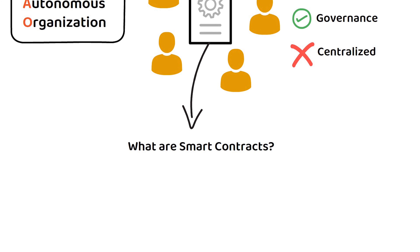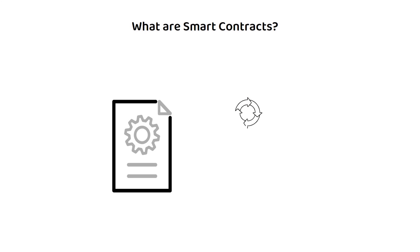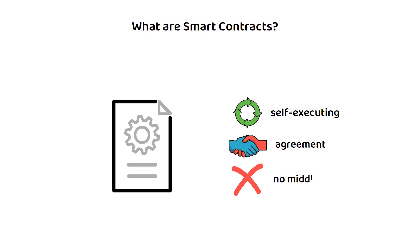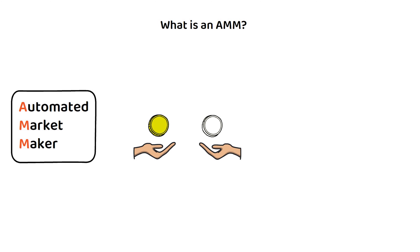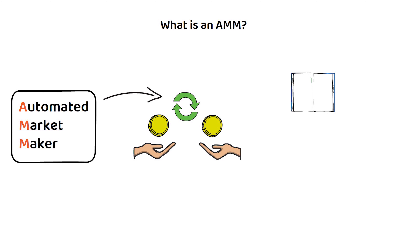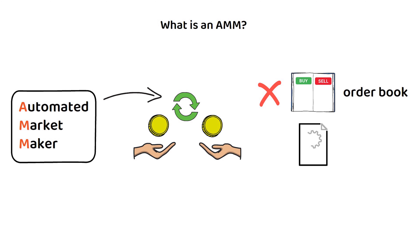Next, we have smart contracts — a type of self-executing agreement that executes when pre-agreed criteria have been met, removing the need for human oversight and trust in a transaction. Then we have AMM, or automated market maker, a type of decentralized exchange mechanism that facilitates the exchange of cryptocurrencies without the need for traditional order books or intermediaries. AMMs also use smart contracts and algorithms to determine asset prices.